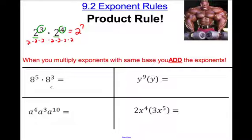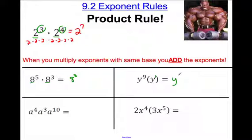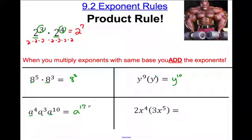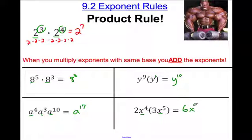Let's do some examples. Do they have the same base? Sure, the base is eight. If I multiply these with the same base, I add them — this is eight to the eighth. If an exponent is not written, it's going to be a one, so that's y to the one. They have the same base of y, so nine plus one is ten. They all have a base of a, so four plus three is seven, plus ten is seventeen. For the last one, two and three aren't the same base, so I just multiply: two times three is six. For the x terms, four plus five is nine. Only if they're the same base can you add their exponents.